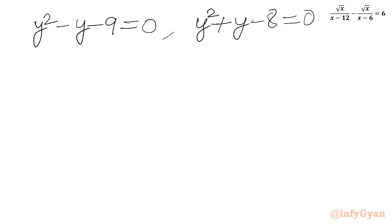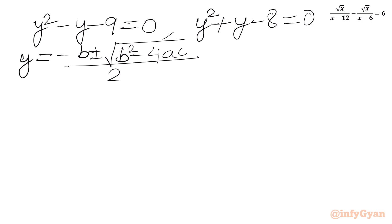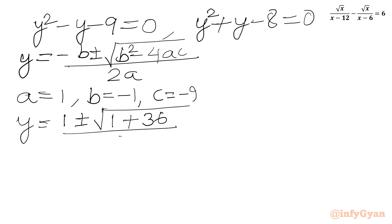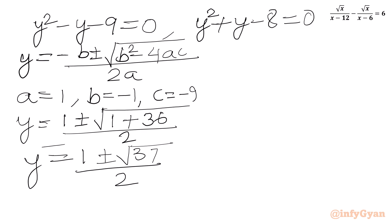Let us solve both equations using the quadratic formula: y equals minus b plus or minus square root of (b squared minus 4ac) over 2a. For the first equation, a is 1, b is negative 1, c is negative 9. So y equals 1 plus or minus square root of (1 plus 36) over 2, which gives y equal to (1 plus or minus square root 37) over 2. We are getting two real values.